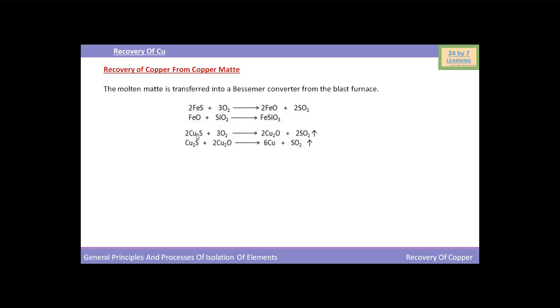In the next step, copper sulphide is oxidized to cuprous oxide. And in the fourth reaction, the remaining copper sulphide reacts with cuprous oxide and forms copper along with sulphur dioxide.